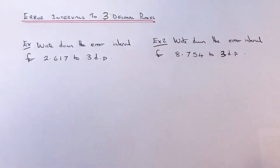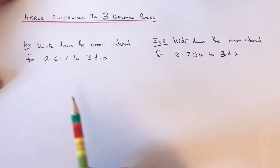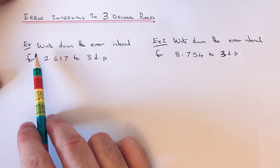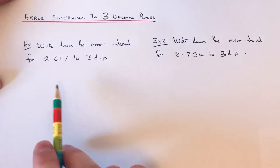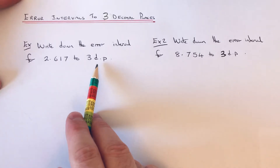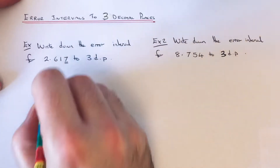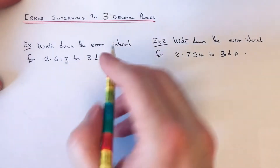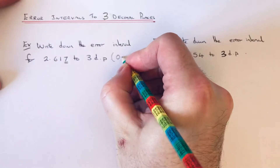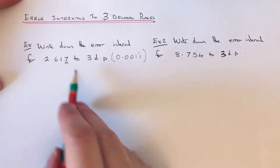Hi guys, welcome back, this is Maths 3000. Today I'm going to show you how to work out the error interval for a number rounded off to three decimal places. So let's have a look at the two examples here. I've got to write down the error interval for 2.617, and it's been rounded off to three decimal places. This means it's been rounded off to the nearest thousandth, so our scale is going up in 0.001.